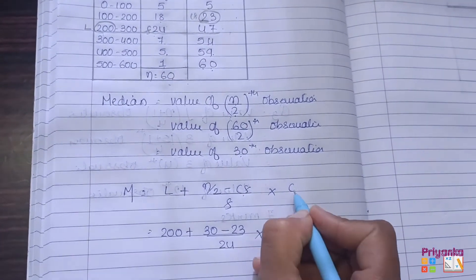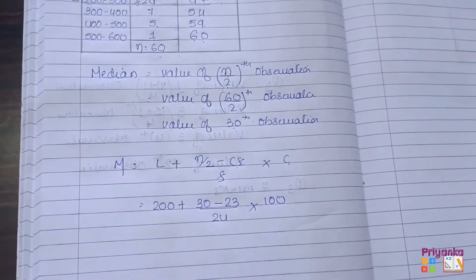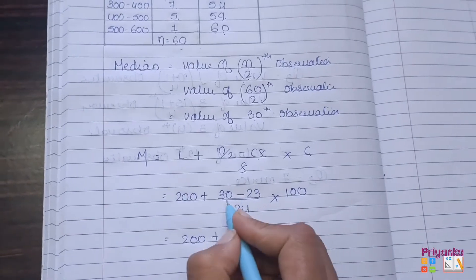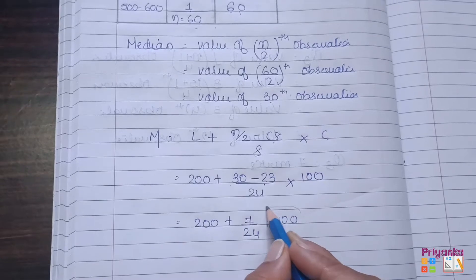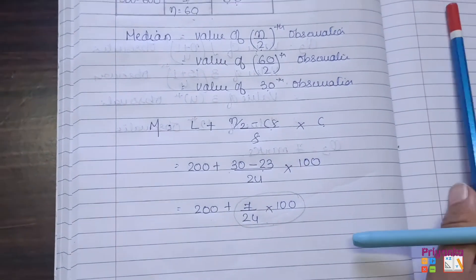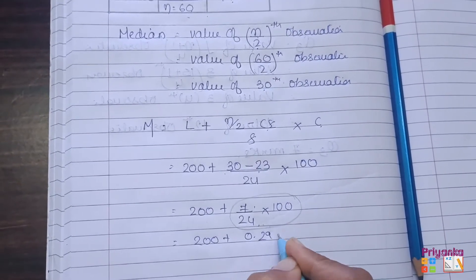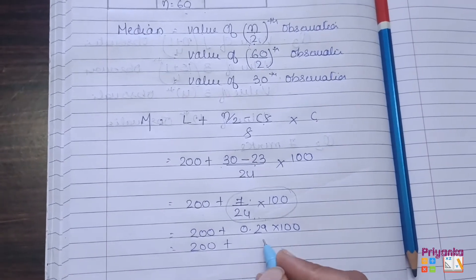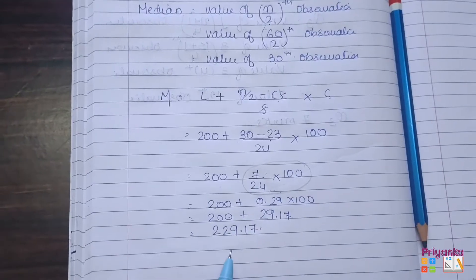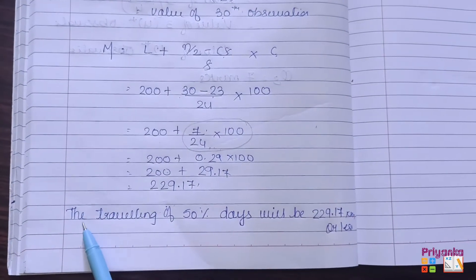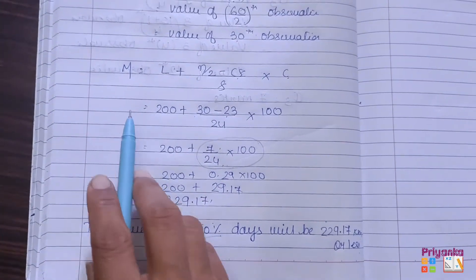Now apply the formula: Median = Lower Boundary Point + [(n/2 − CF) / f] × c. Substituting: 200 + [(30 − 23) / 24] × 100 = 200 + [7/24] × 100 = 200 + 0.2917 × 100 = 200 + 29.17 = 229.17. This means the traveling distance of 50 percent of days will be 229.17 kilometers or less.